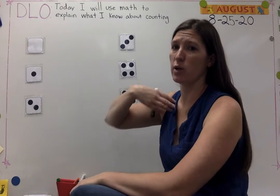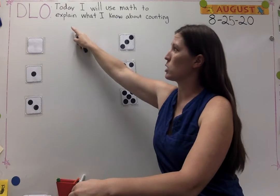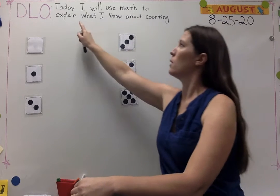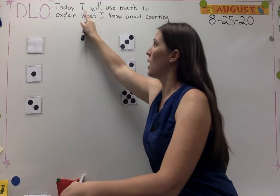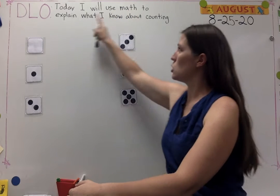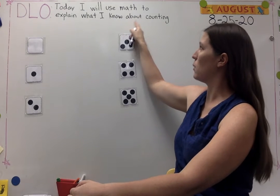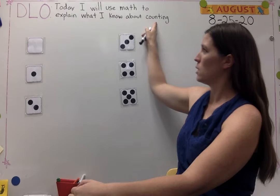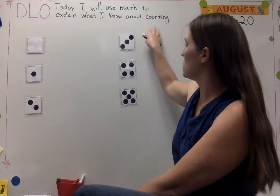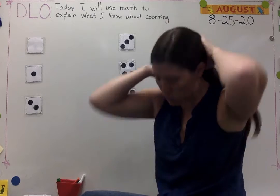Our daily learning objective. Today I will use math to explain what I know about counting. This is a long one, so let's break it down. Explain means giving details of how you know something. And counting — when we count the dots or the birds or the fruit — that's just how we've been counting lately.